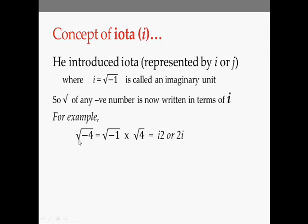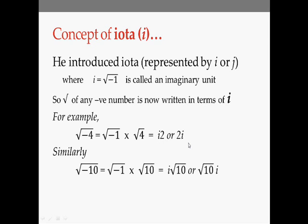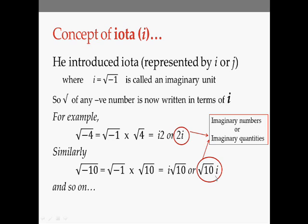For example, the square root of minus 4 can be represented as the square root of minus 1 times the square root of 4. The square root of minus 1 is IOTA, and the square root of 4 is 2, so the square root of minus 4 equals 2i. Similarly, the square root of minus 10 can be represented as i√10. These complete quantities — 2i and i√10 — are known as imaginary numbers or imaginary quantities.